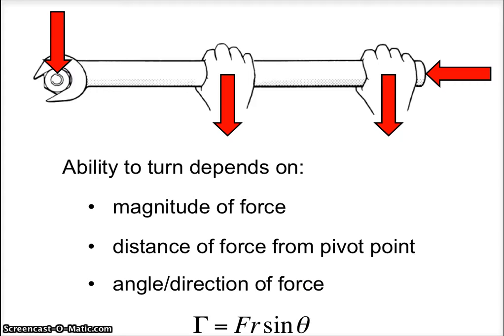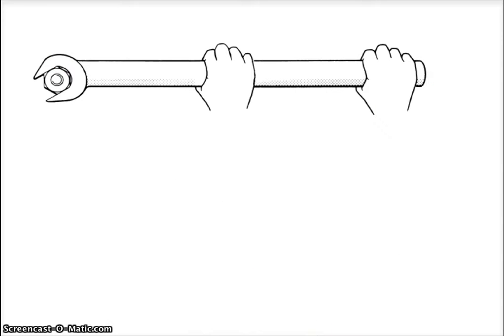This is the equation for torque. Torque, which is capital gamma, is the ability to turn, the ability of a force to turn. And we see that it incorporates all of these three things. It incorporates the magnitude of the force, F. It incorporates the distance of the force from the pivot, R, and also the angle or direction, theta. So let's take a picture.